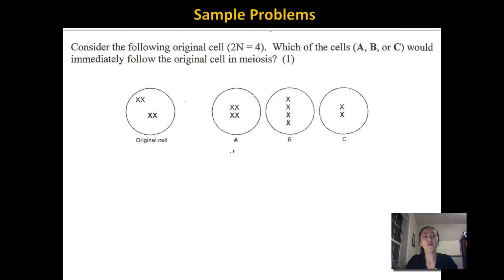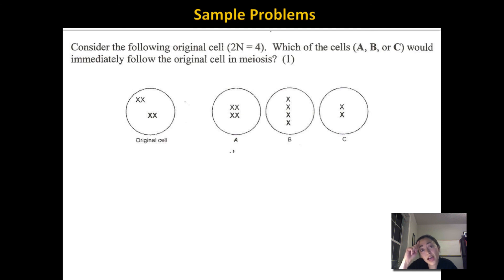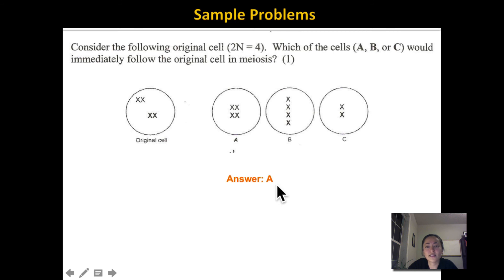Considering the following original cell where 2N equals 4, so the original cell has four chromosomes: which cell — A, B, or C — would immediately follow the original cell in meiosis? The chromosomes are paired up but not lined up in the middle, so the original cell must be in prophase 1. What follows prophase 1 is metaphase 1, where the homologous chromosome pairs stay together and line up in the middle. The only answer that shows paired chromosomes aligned in the middle is A.